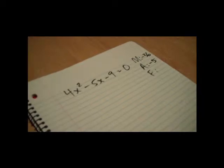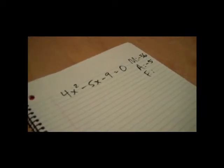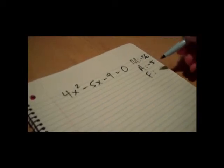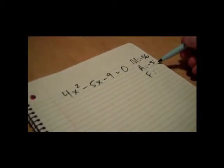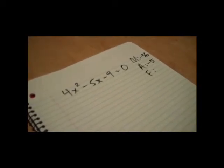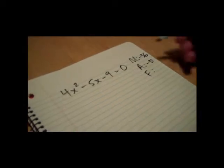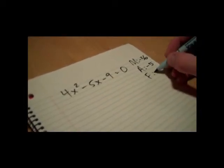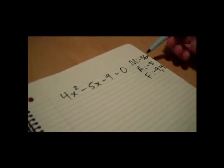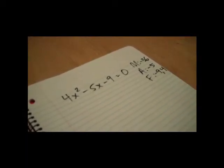Now comes the trickiest part of the whole process for a lot of people, and that is what are the factors of negative 36 that add to negative 5? Usually students take a minute, look at their calculators—there are different ways you can find these factors. The answer is negative 9 and positive 4. Those are the two numbers that multiply to negative 36 but add to negative 5.